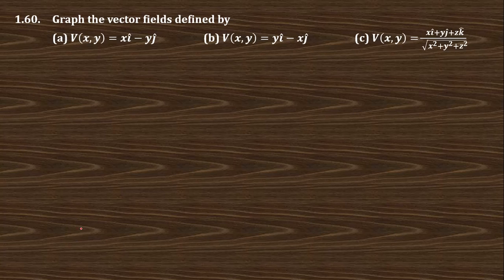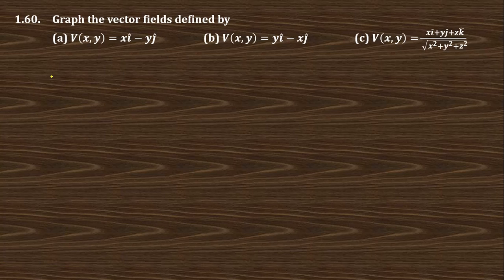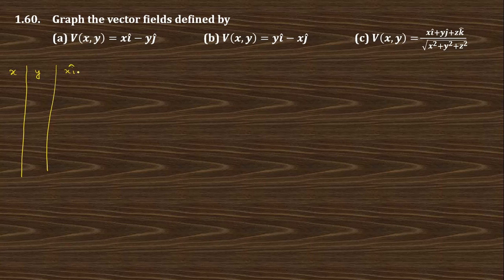In this video we want to solve this question. The question says: graph the vector field defined by V(x,y) = xi + xj. To find this graph, I want to draw a table of values of x, y, and then xi minus yj.